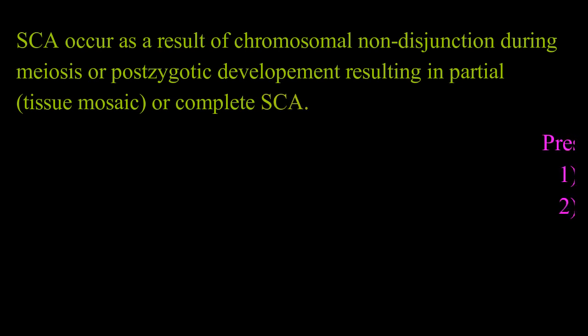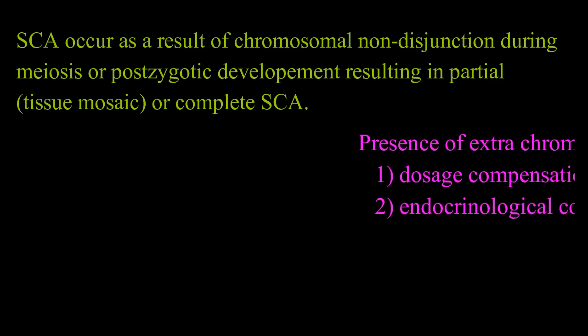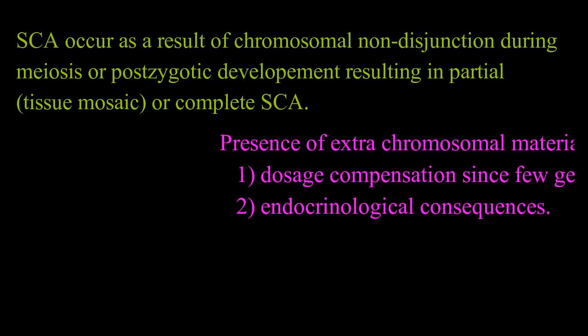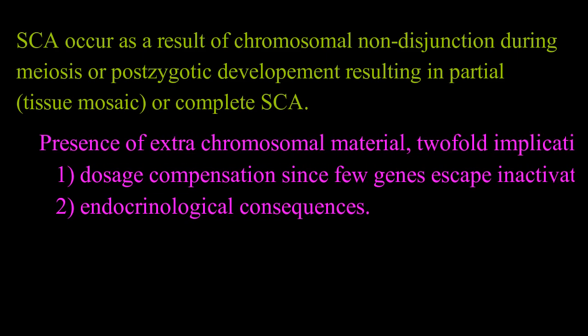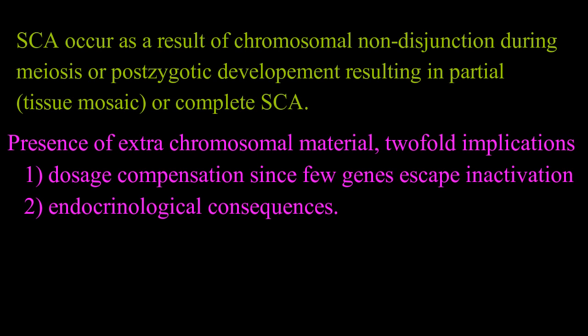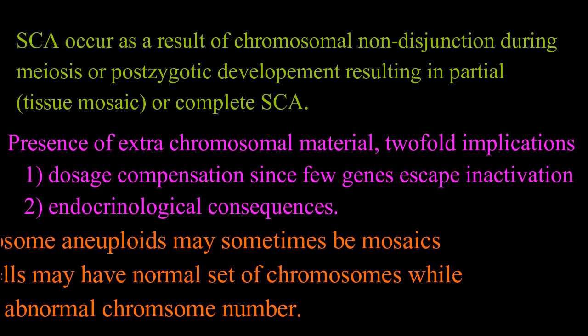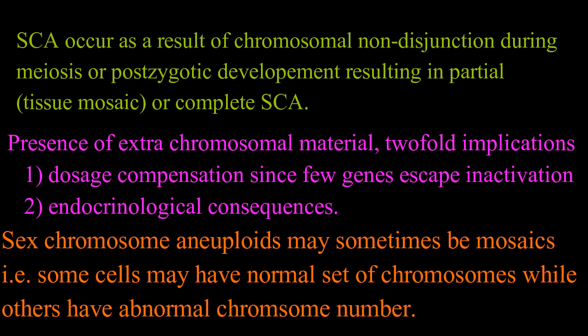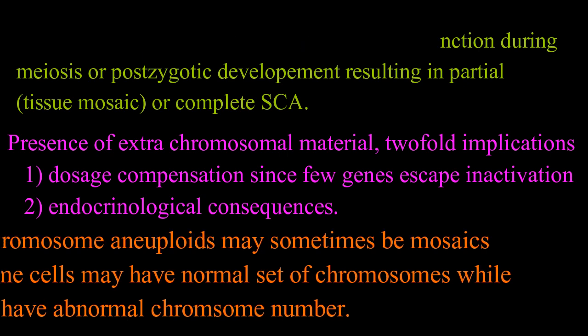As a result of the presence of extra chromosomal material, two-fold implications arise: first, dosage compensation, since few genes escape inactivation, and second, endocrinological consequences. Sex chromosome aneuploidy may sometimes be mosaic, meaning some cells may have a normal set of chromosomes while others have an abnormal chromosome number.